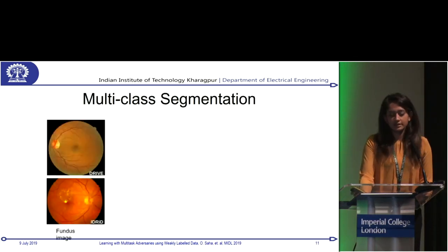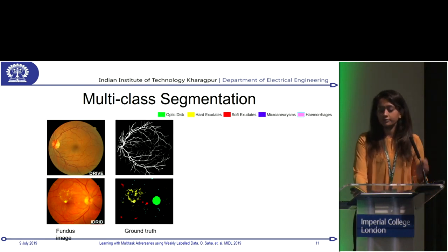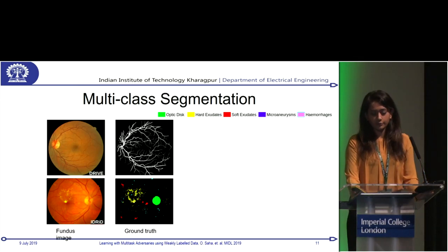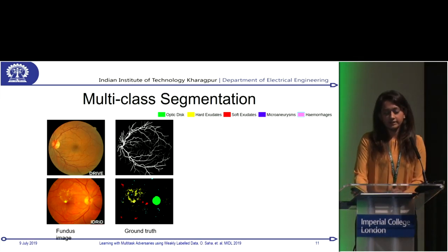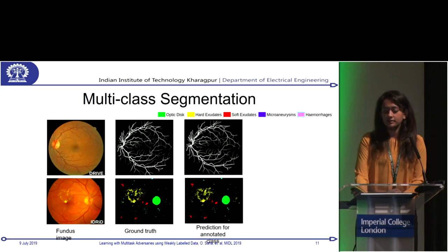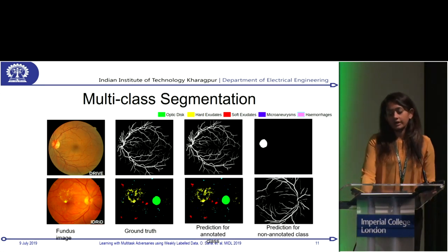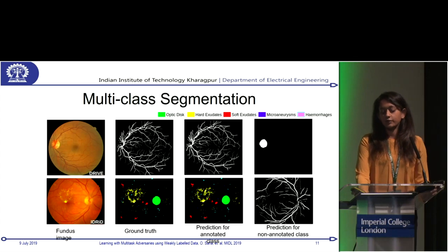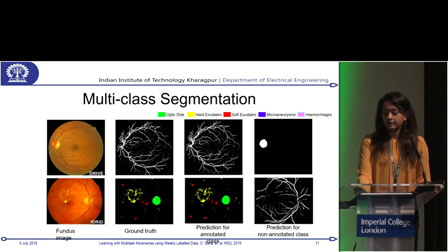Here are some results. The input fundus images and their ground truths are shown — for DRIVE we have the vessels, and for IDRID we have the optic disc and diseases. This is the prediction we get. We also get predictions for non-annotated classes: for DRIVE, even though we don't have the optic disc annotated, our network still produces the optic disc channel. Similarly for IDRID, we get vessel predictions.